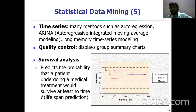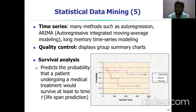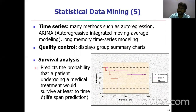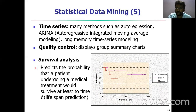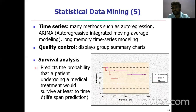In time series statistical data mining, methods such as autoregression and ARIMA (autoregressive integrated moving average) model and long memory time series models are used. Quality control summary charts represent the quality and accuracy measures of the datasets. Survival analysis analyzes the probability that a particular dataset will run successfully, and what the accuracy of a particular value is — for example, predicting the probability that a patient undergoing medical treatment would survive through a given timespan.